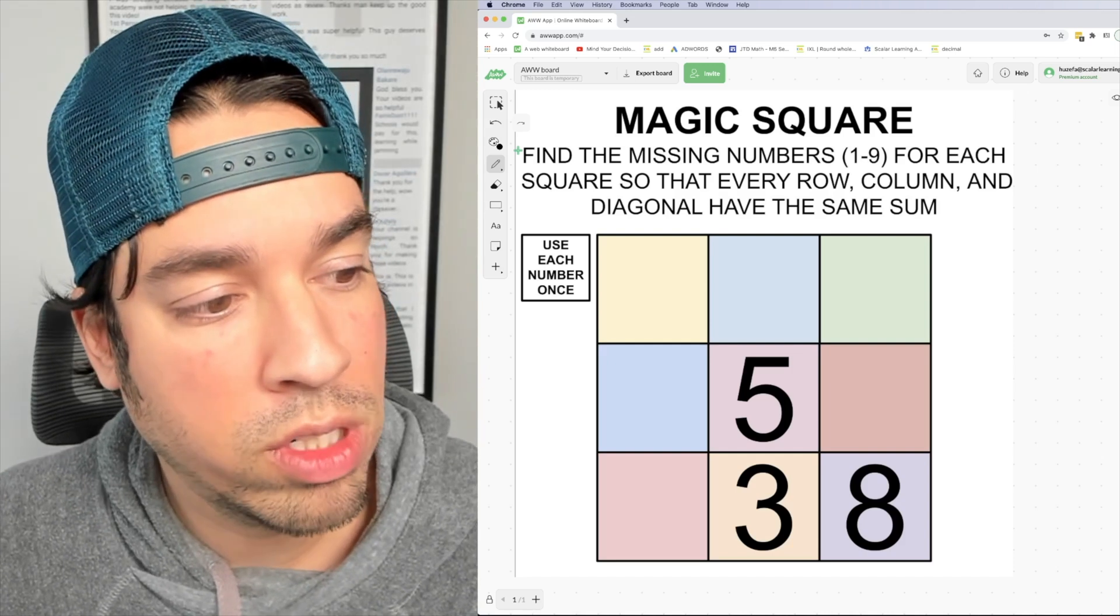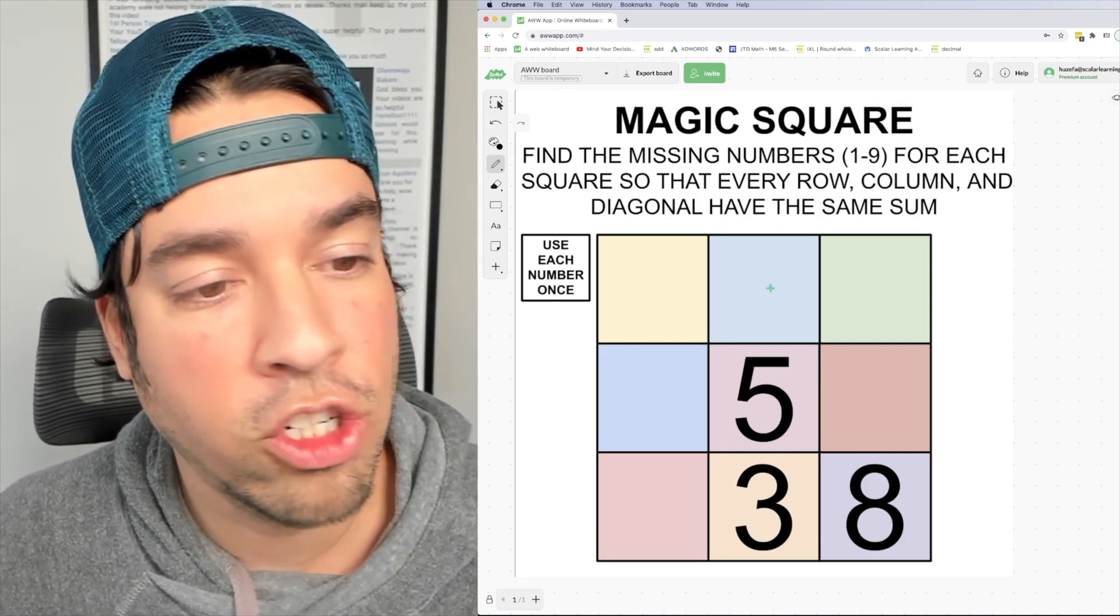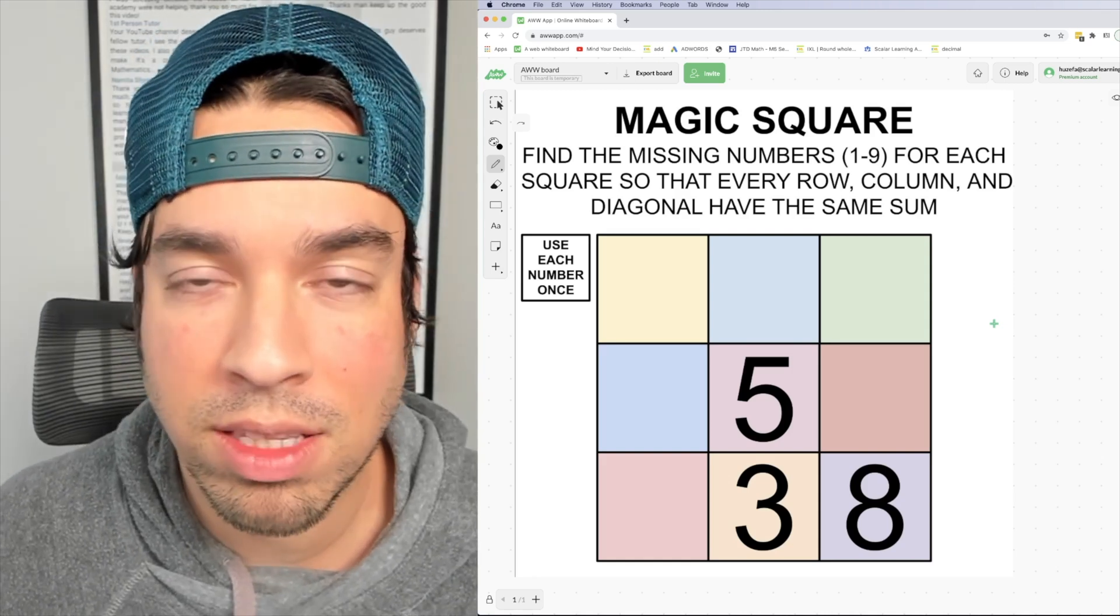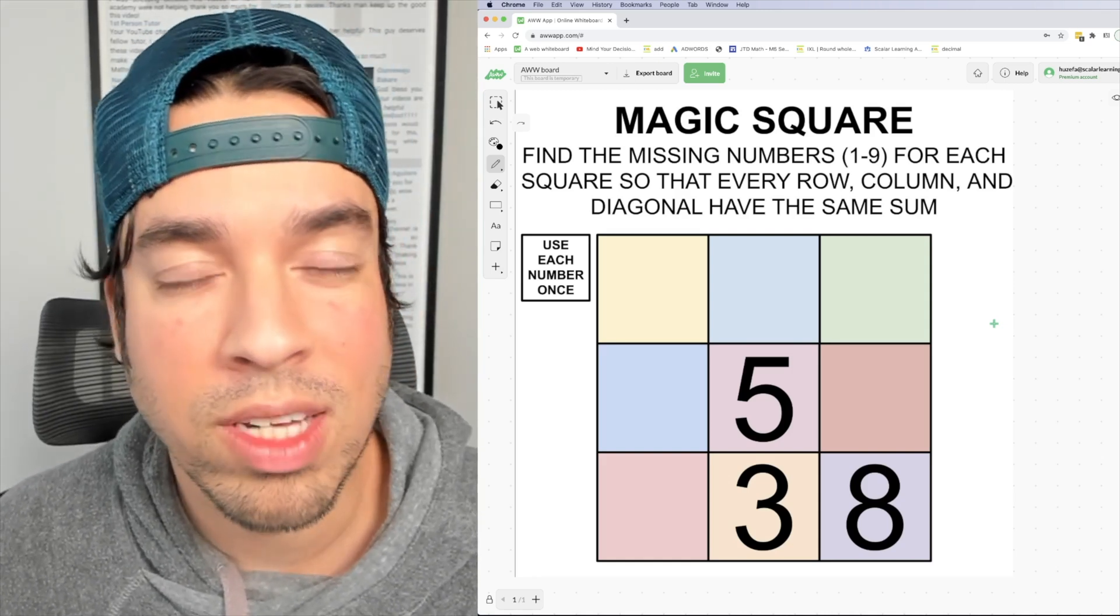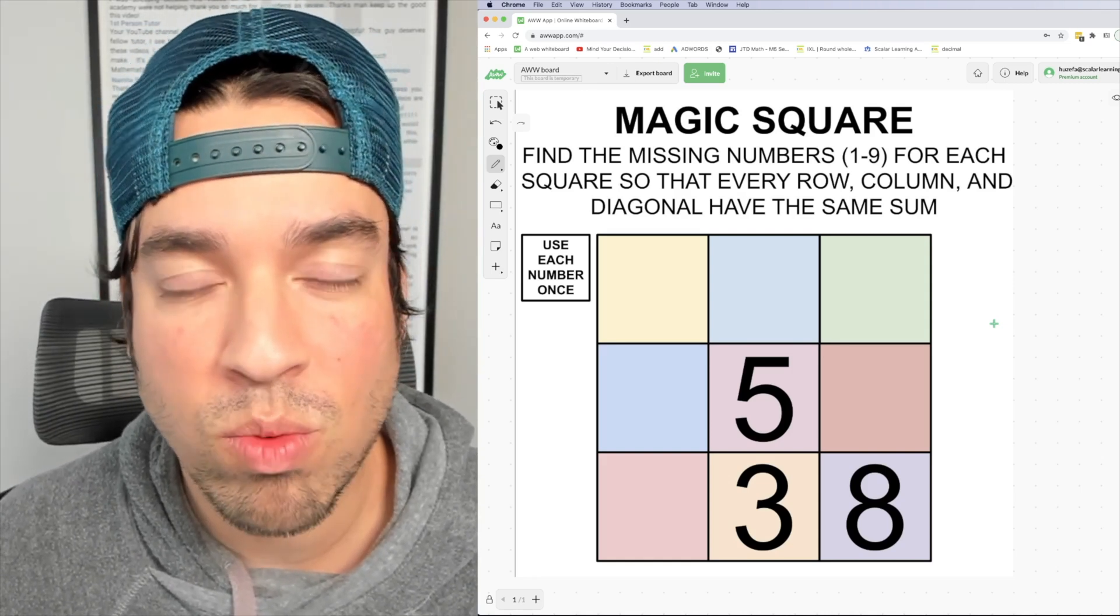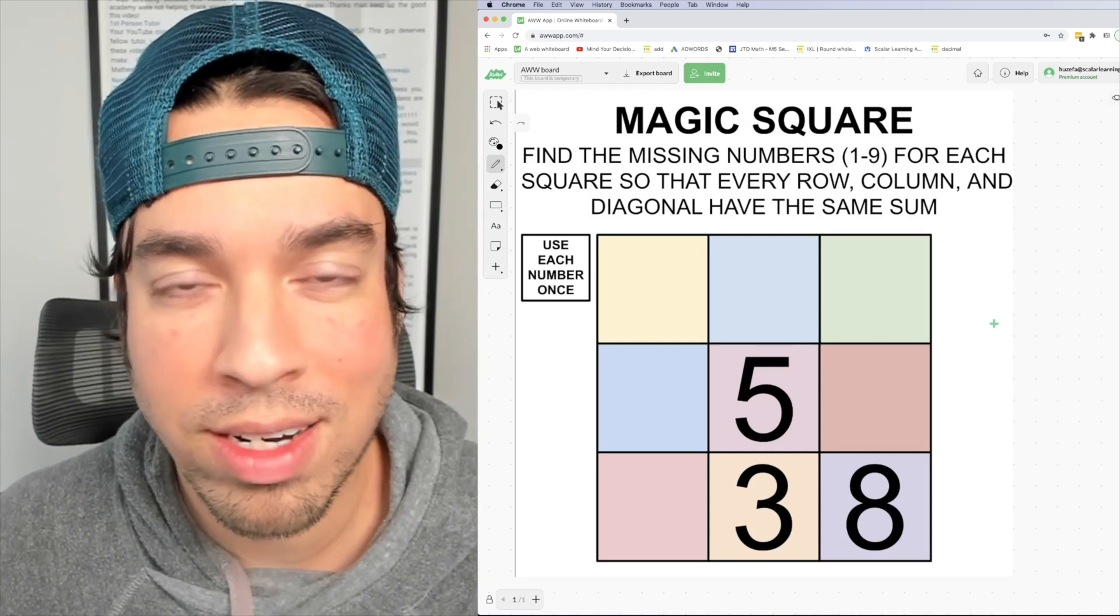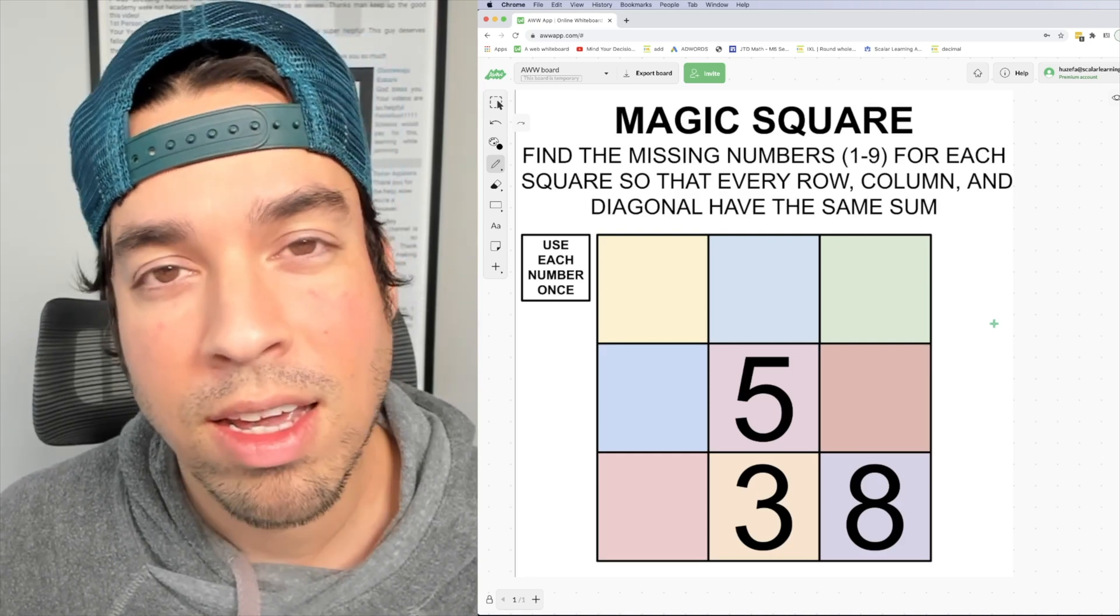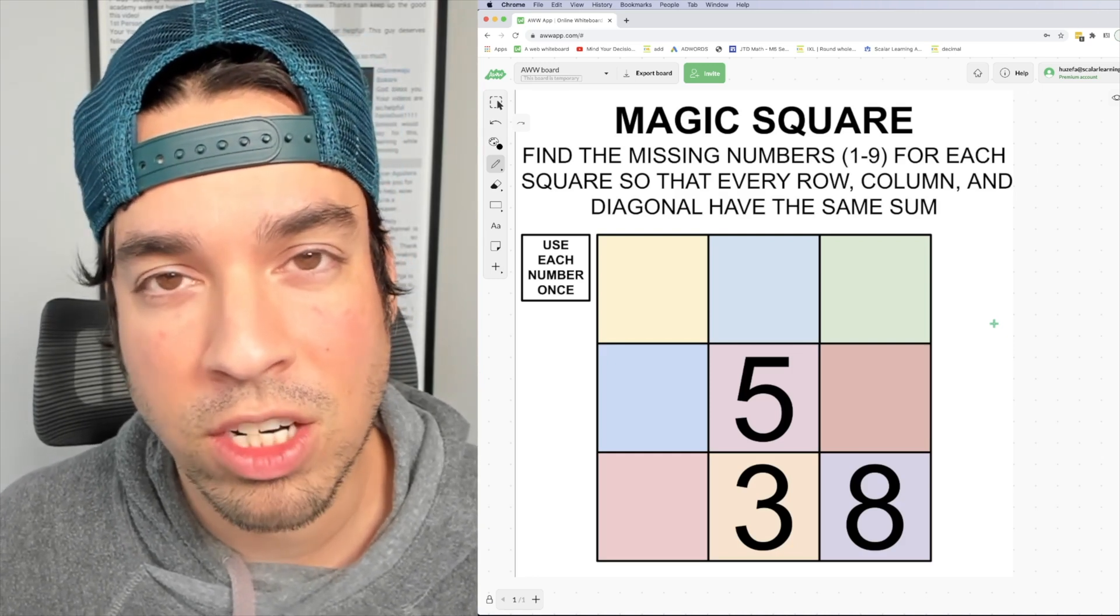So again in the corner you see that says you must use each number once, meaning for one through nine every single one of those has to be in this and you can't use any number twice. So it's only got to be one through nine, each one used one time. Go ahead and hit that pause button and see if you can figure it out. When you're ready hit play and I'll give you the explanation.